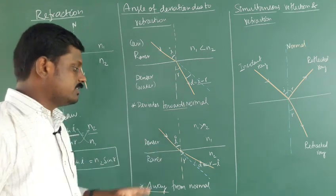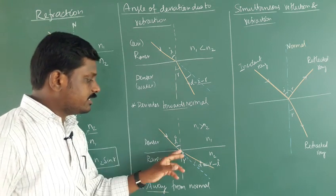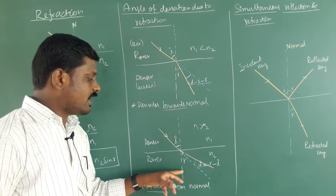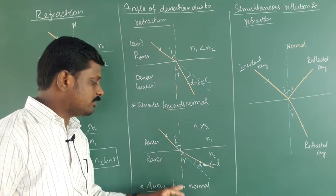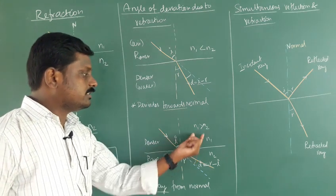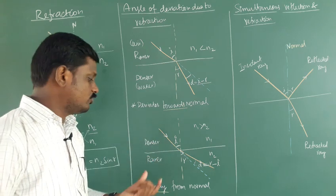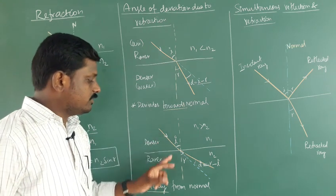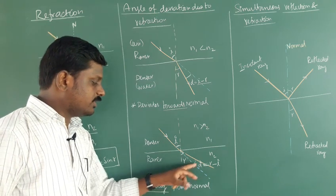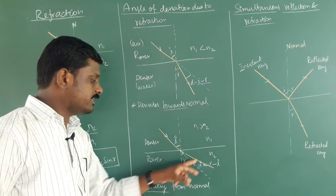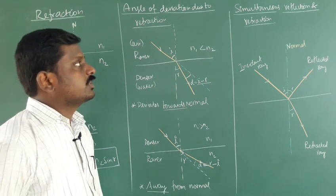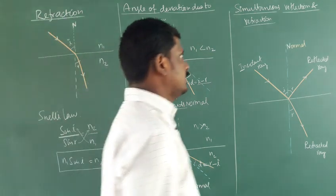In the reverse case, when light travels from denser to rarer, n1 is greater than n2. The refracted ray deviates away from the normal. So the angle of deviation in this case is r minus i.